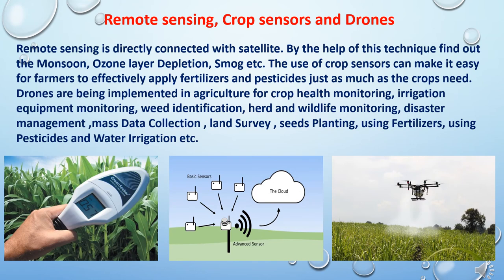Other roles include remote sensing, use of crop sensors, and drones. Remote sensing is directly connected with satellites. By the help of this technique, one can find out the monsoon, ozone layer depletion, and smoke, etc. The use of crop sensors can make it easy for farmers to effectively apply fertilizers and pesticides just as much as the crop needs. Drones are being implemented in agriculture for crop health monitoring, irrigation equipment monitoring, weed identification, herd and wildlife monitoring, disaster management, mass data collection, land survey, seeds planting, using fertilizers, pesticides, and water irrigation, etc.